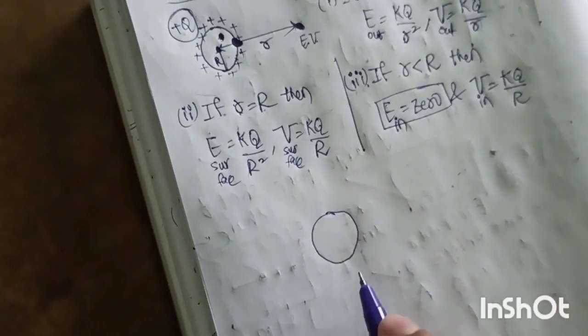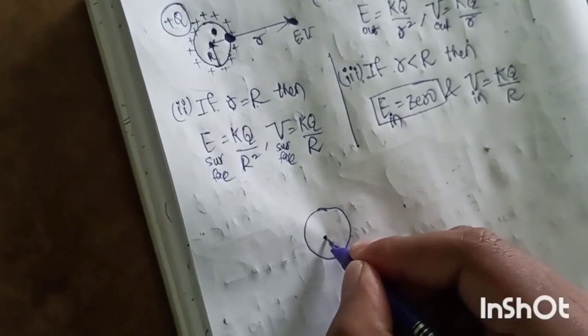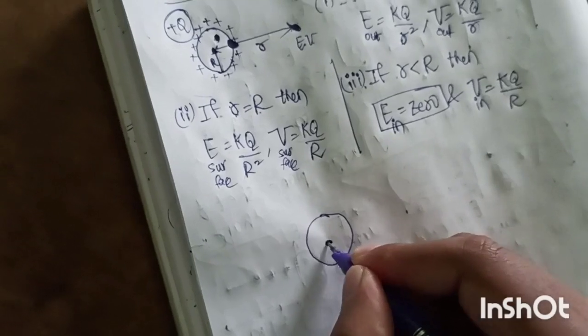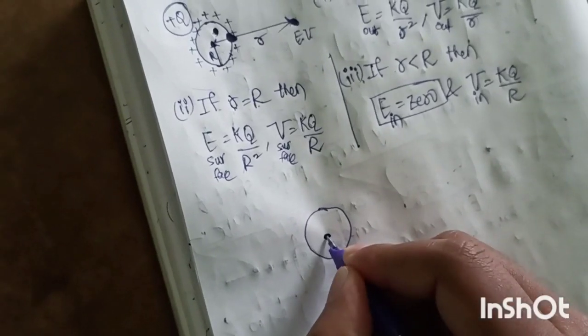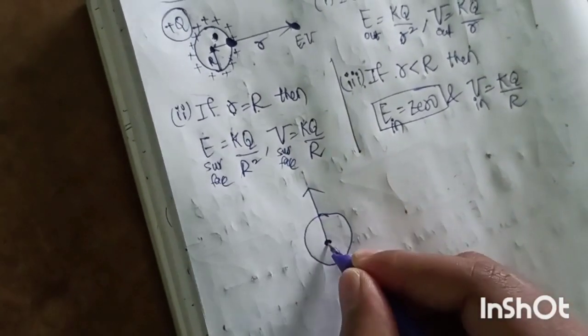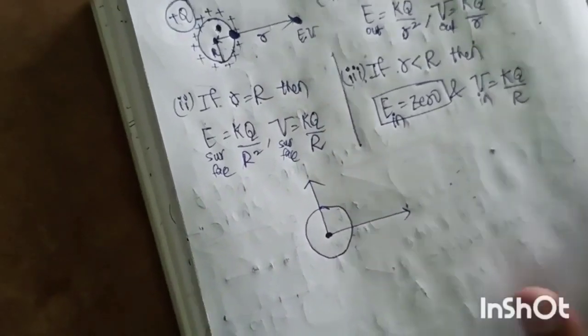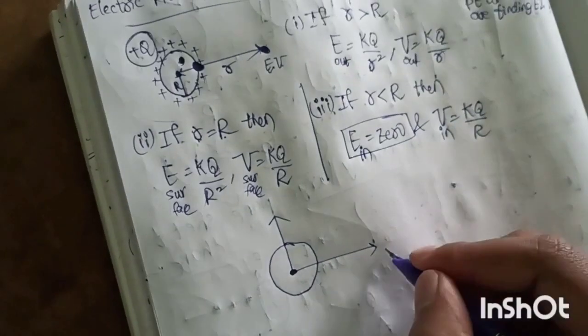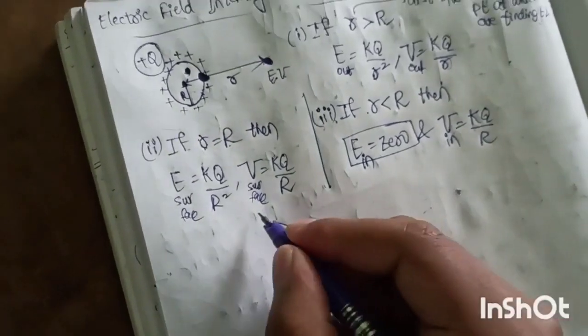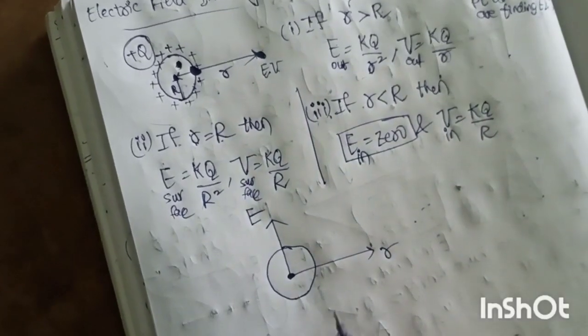This is a hollow sphere. For the graph, the horizontal axis is r and the vertical axis is E.